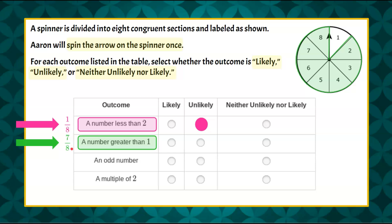So that means that when we look at our probability, seven out of our eight congruent sections on our spinner are that expected outcome. So we can see we have a seven out of eight chance of having this outcome come true, which means it's likely to happen.